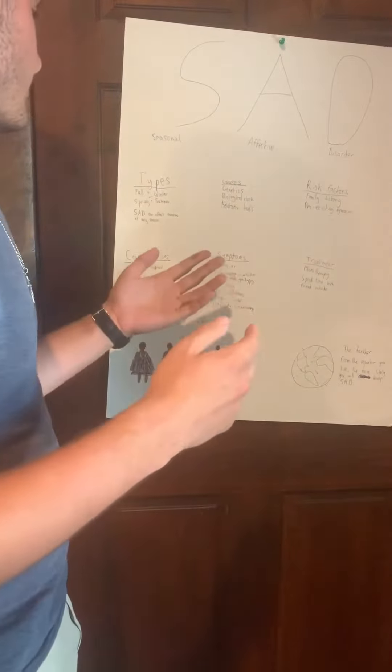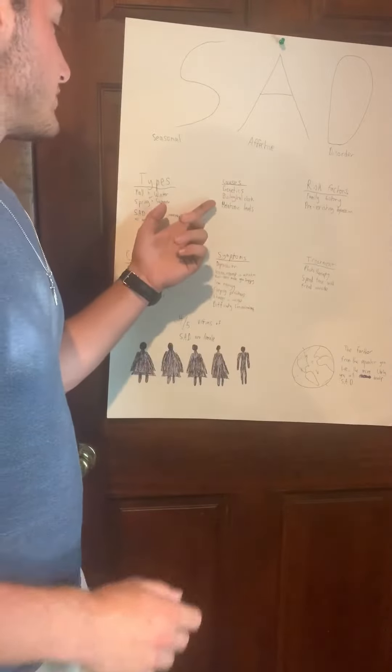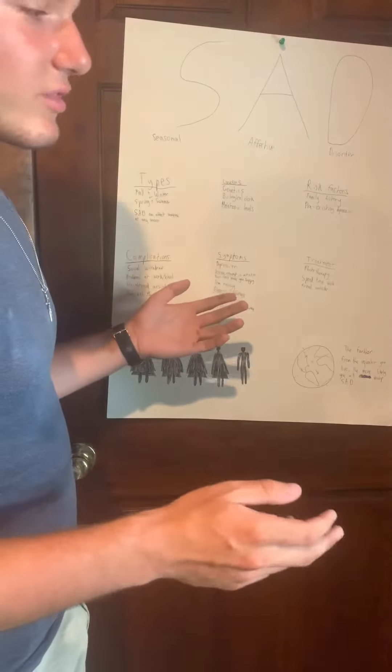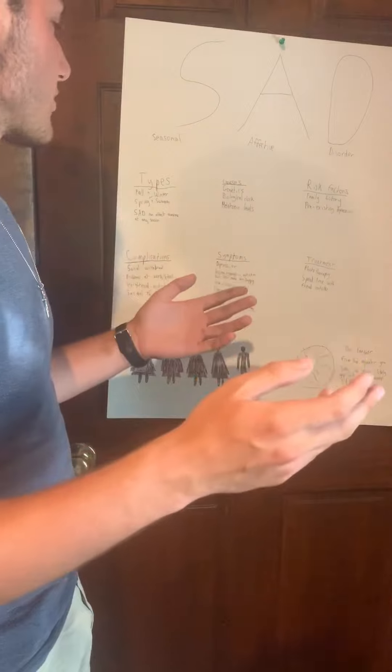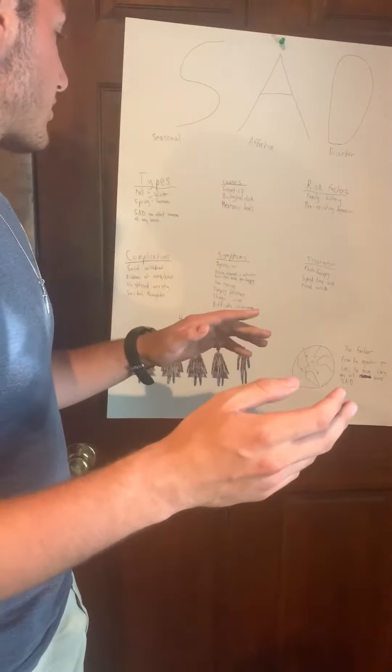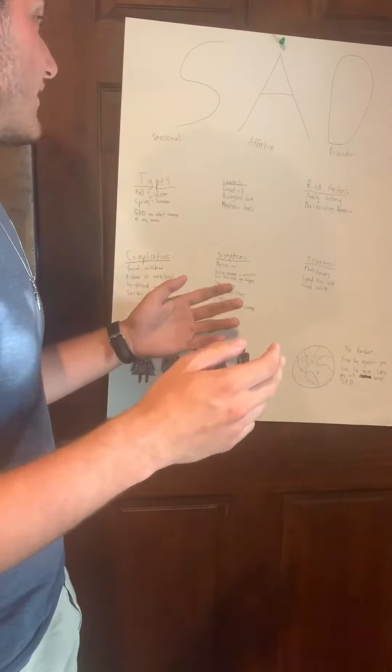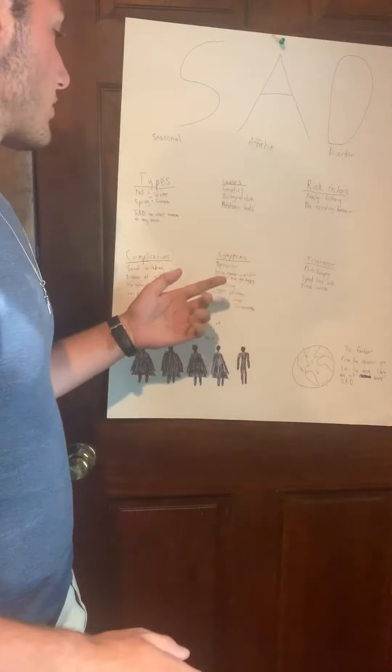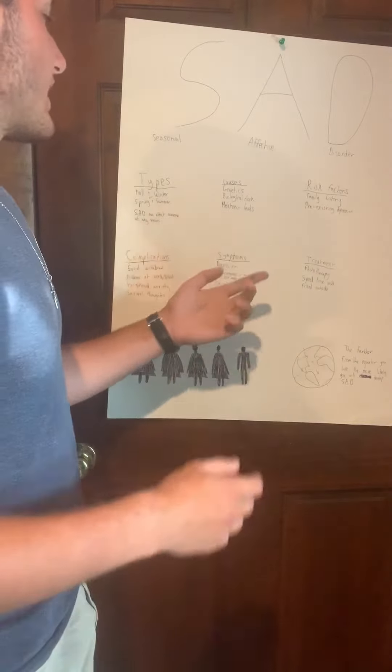There are different types: fall and winter, or summer and spring. SAD can affect someone at any season, but the reason it affects people is because the different amounts of sunlight based on the different seasons causes a change in your biology and the chemicals you release, leading to depression.